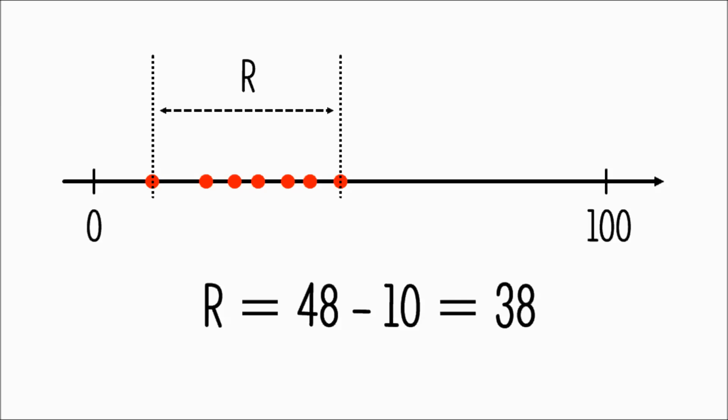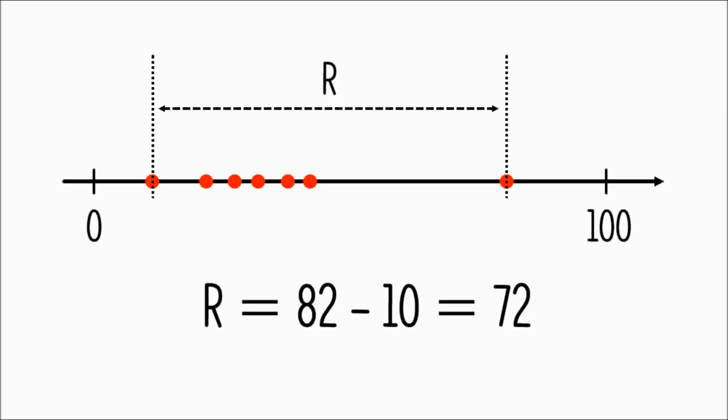A really unpleasant consequence of that is that outliers always have a direct impact on the measure, while at the same time everything between the largest and the smallest value gets ignored.